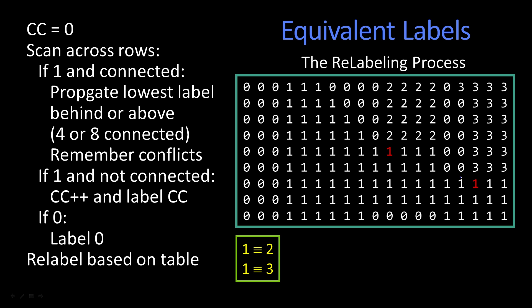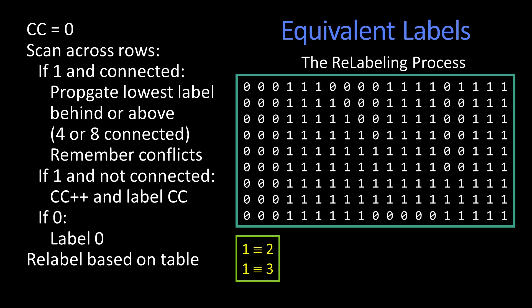So after I'm done labeling all of these, and I've got ones, twos, and threes, I relabel everything as a one, because all the twos get relabeled as one, all the threes get relabeled as one, and that way the system knows that there's exactly one object, and all the pixels with the ones are the pixels from that object.